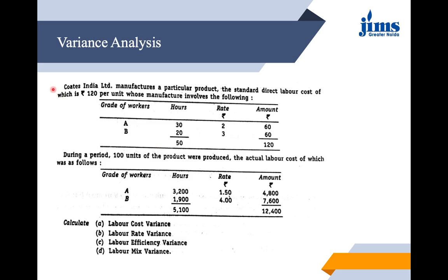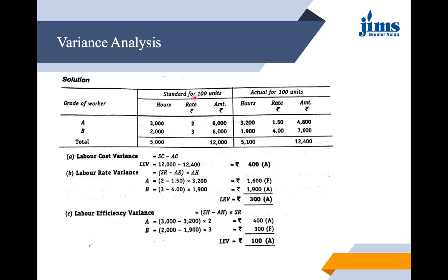Quotes India Limited manufactures a product with a standard direct labor cost of rupees 120 per unit. Grade A workers contribute 30 hours at rupees 2 per hour; grade B workers contribute 20 hours at rupees 3 per hour. During the period, 100 units were produced. Actual labor: Grade A — 3,200 hours at rate 1.50, giving 4,800 rupees; Grade B — 1,900 hours at rate 4, giving 7,600 rupees. For one grade there is a favorable outcome and for the other, adverse.